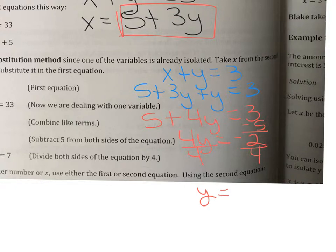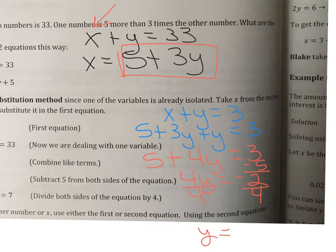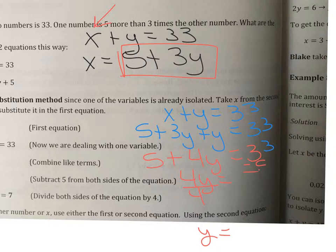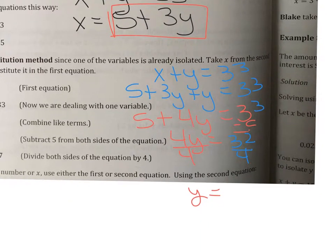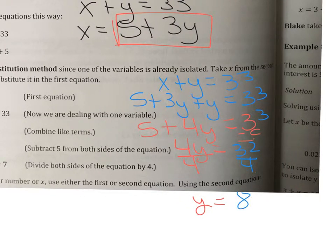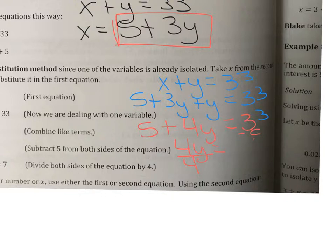I made a mistake — I had written 3 instead of 33, so let me correct that. 33 minus five is 28, and 28 divided by four is seven. So Y equals seven.